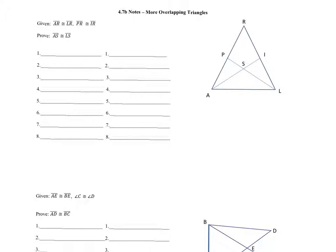This first set of information: they tell you that AR is congruent to LR. So they're telling you this whole side is congruent to this whole side, which is a little bit hard to mark on this set of triangles because there's extra lines cutting things up. They also tell you that PR is congruent to IR.